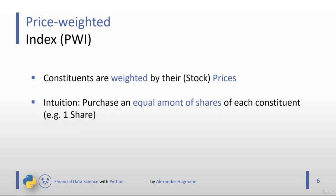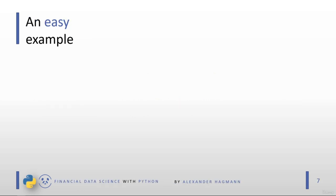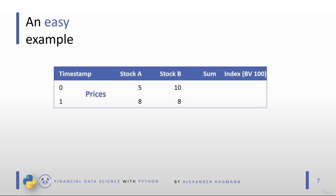The intuition behind a price-weighted index is like purchasing an equal number of shares — say one share — of each constituent. For example, if our index consists of two constituents, we simply create the index by purchasing one share per constituent. Consider stock A and stock B at two timestamps. Yesterday stock A was priced at 5 and stock B at 10. Today both moved to 8.